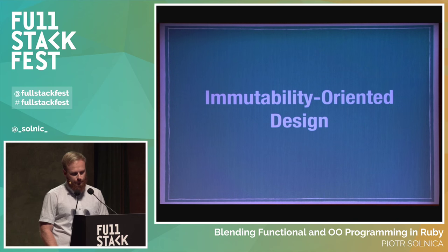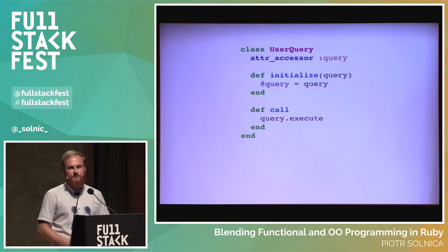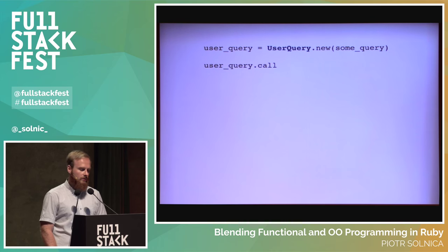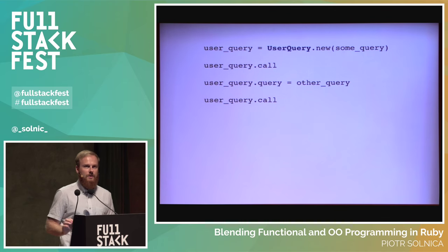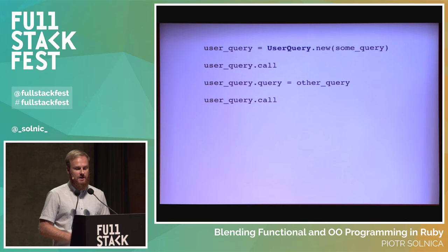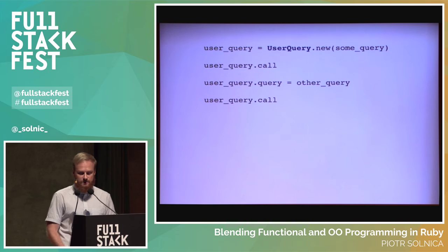Immutability-oriented design is simple. Here's a typical class in Ruby — a user query that receives a dependency injected into the constructor. It's typical to define interfaces that allow you to change an object, meaning after you call it, it's possible to mutate it. That's common and idiomatic for many people. For me, it's very bad. When something can change, other things may depend on its initial state, then the state changes, and things break. This is the source of complexity and bugs.